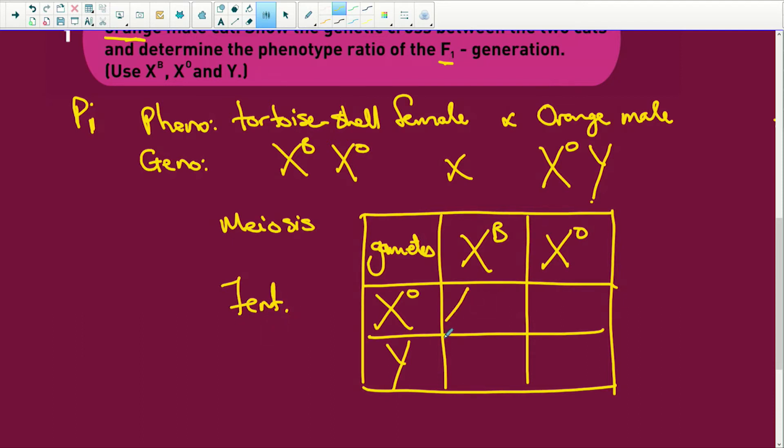So we've got XB and XO. And our male, there. And we have fertilisation occurs. Okay, now we have XB, XO. So that's a tortoiseshell female. And we have an XOXO, our little orange female. And then we have a black male and we have an orange male. Look how cute that is.